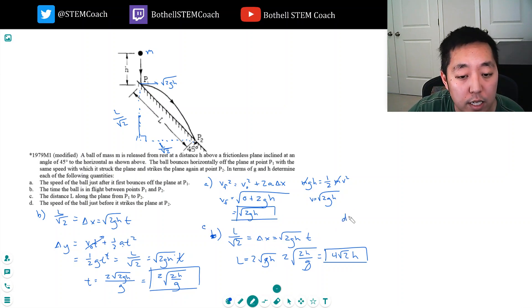And last, d: what is the speed of the ball just before it strikes the plane at P2? Well, the speed is the scalar quantity, the magnitude of the velocity. I know its velocity here is square root of 2gh, because in the horizontal direction there's no force to change the velocity. So the question is, what is its vertical velocity? Once I know the vertical velocity, then I can add these two vectors together.